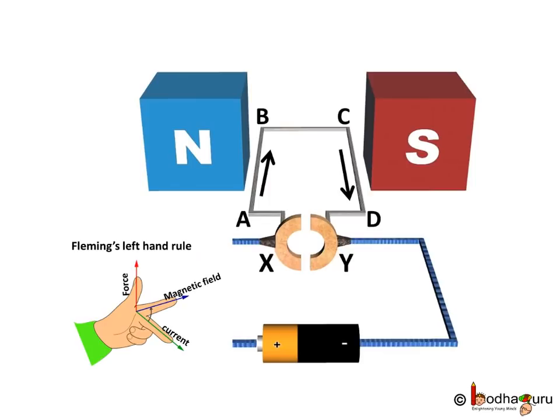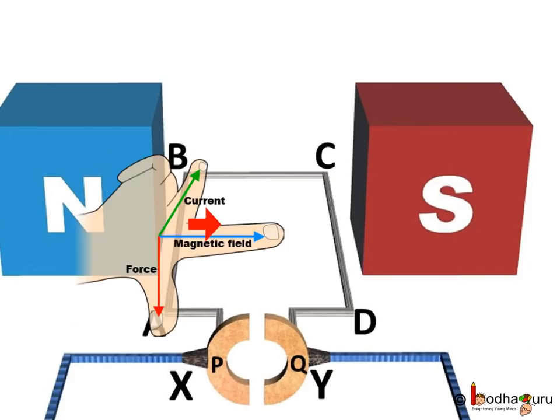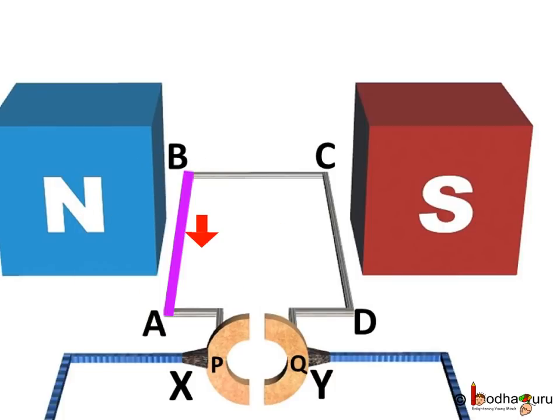So, now let us apply Fleming's left hand rule to find the direction of the force on the two arms. Focus on arm AB. Look, the index finger points to the magnetic field direction which is north to south pole. The middle finger points to the direction of current in the arm AB. So, the thumb will point to the direction of the movement of conductor and this is downward. So, we can say the force acting on the arm AB pushes it downwards.